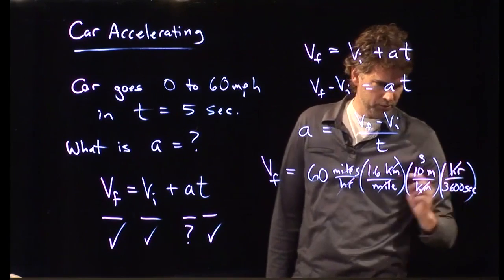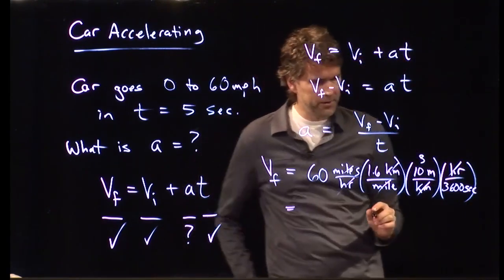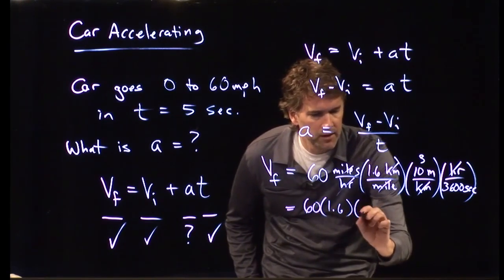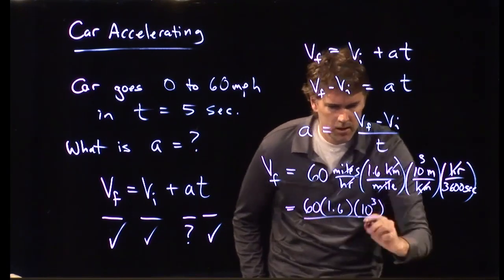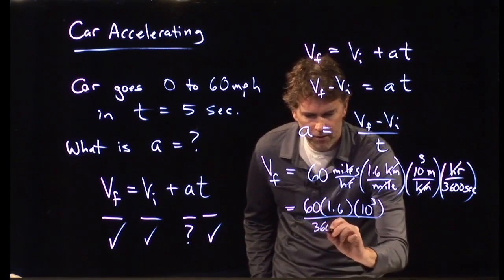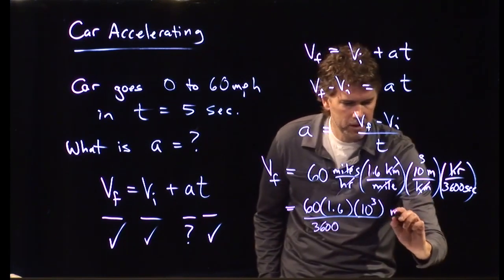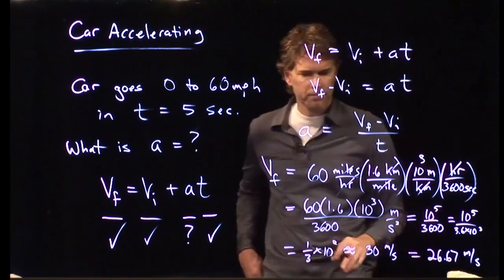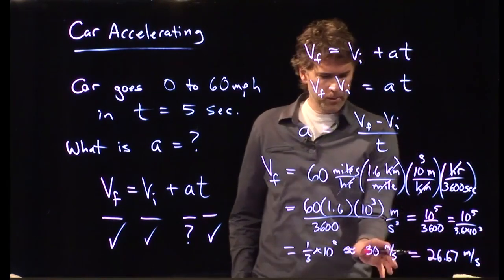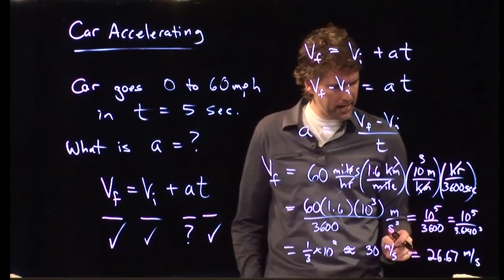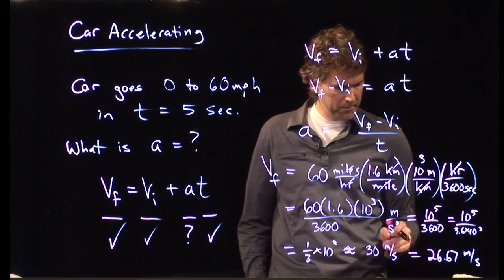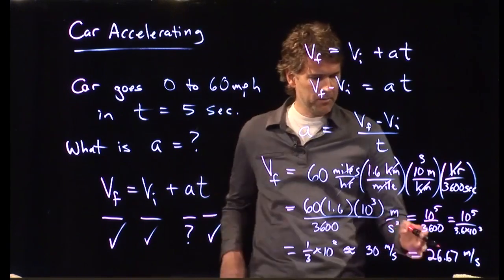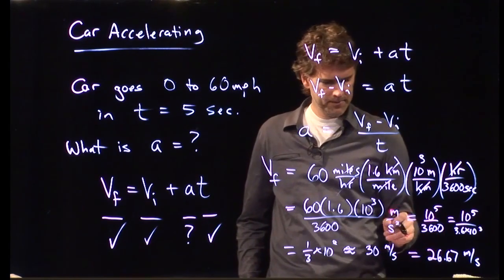So, let's run these numbers and see what we got. 60 times 1.6 times 10 to the 3 divided by 3,600. And that's going to be meters per second. And if you guys have a calculator, plug that in your calculator. So, we approximated that as 30 meters per second. The exact answer was 26.67 meters per second. Which sounds right because we're getting 60 miles per hour and we said it's roughly a factor of 2.